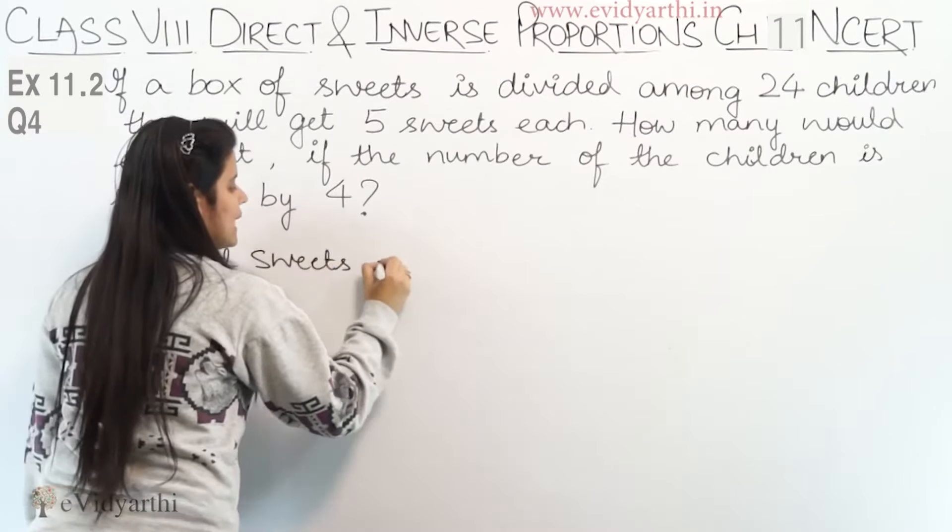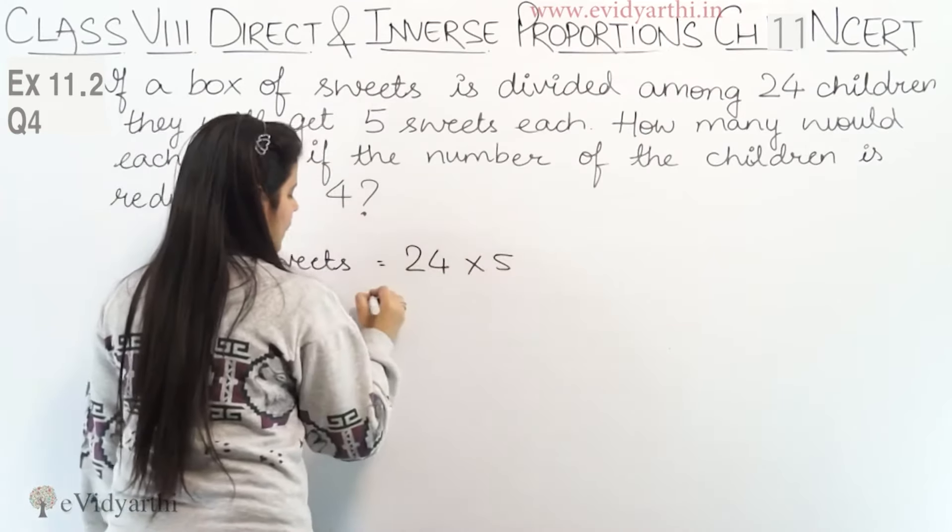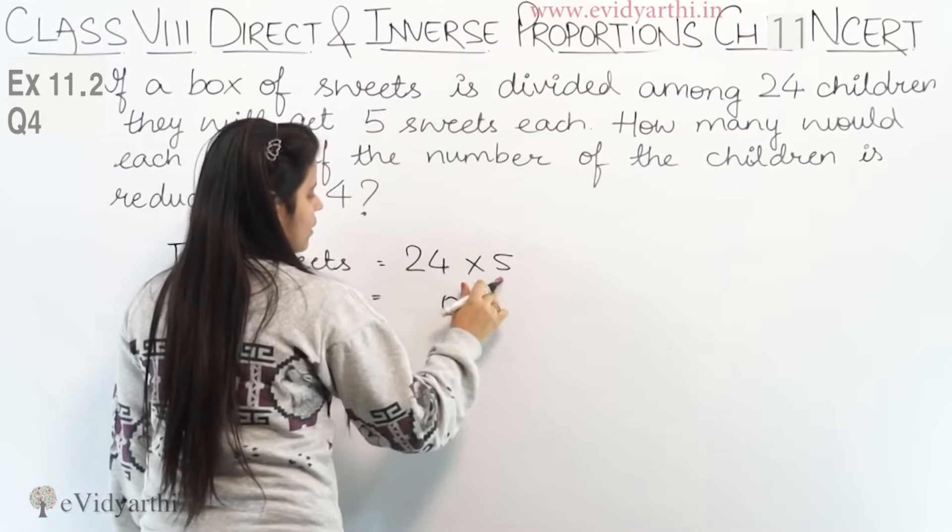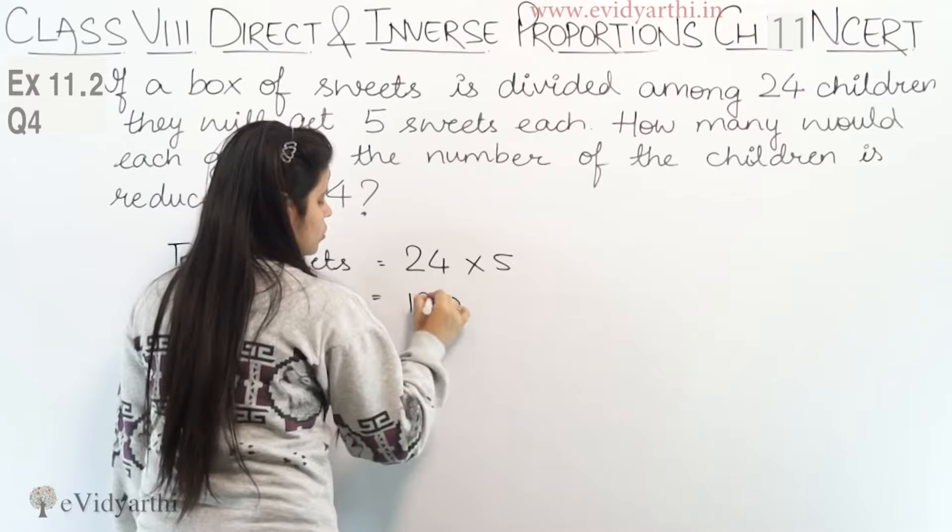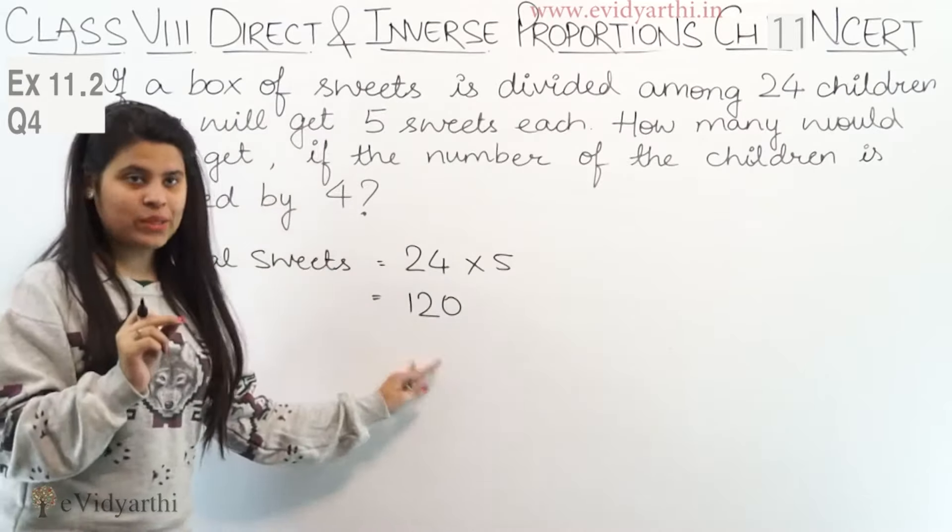24 children have 5 each, so let's multiply this. 5 times 4 is 20, 5 times 2 is 10, plus 2 is 12, giving us 120. The total number of sweets is 120.